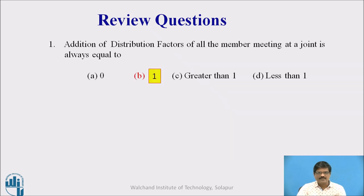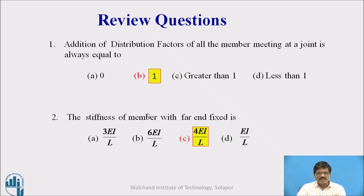Welcome back. These are the answers for the review questions. The first question, the answer is 1. Because the summation of distribution factors at a joint is always equal to 1. And the stiffness of member with far end fixed is 4EI by L. That already we discussed.